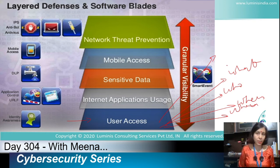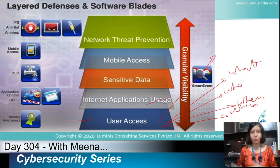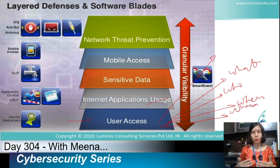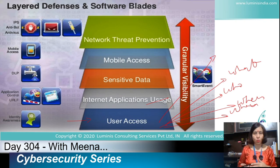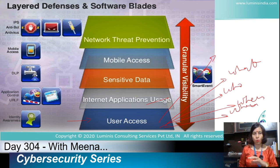We can also control internet and application usage. During office hours, we may not want our users to access social media like Facebook or YouTube, because it will consume bandwidth and distract employees from their work. We can control who inside our network accesses what, and at what time — for example, allowing Facebook access only during the lunch break.